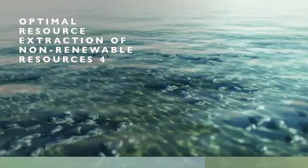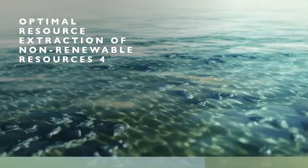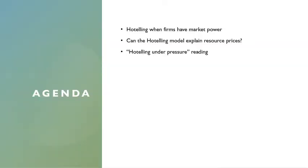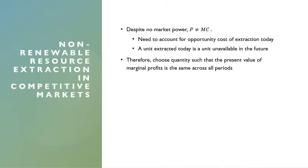This is our last lecture for this module on optimal resource extraction of non-renewable resources. What we'll cover is Hoteling when firms have market power, because there's a lot of market power in the energy industry broadly, and market power is one of the main externalities we talked about in Module 2. We'll also cover whether the Hoteling model can explain resource prices, and then Hoteling under pressure.